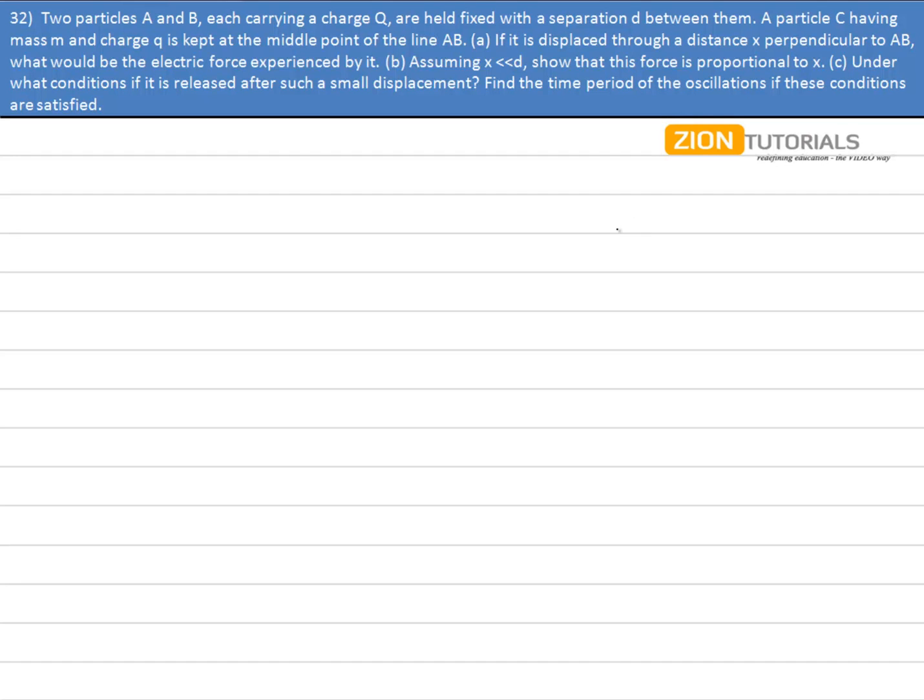Now in this question we have two charges A and B, each of charge Q, separated by a distance D between them. There is another charge C which is at a distance D by 2 from B as well as A.